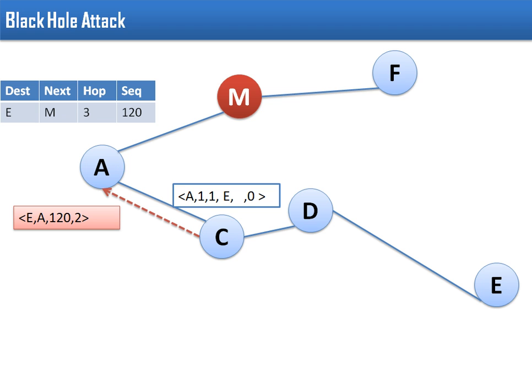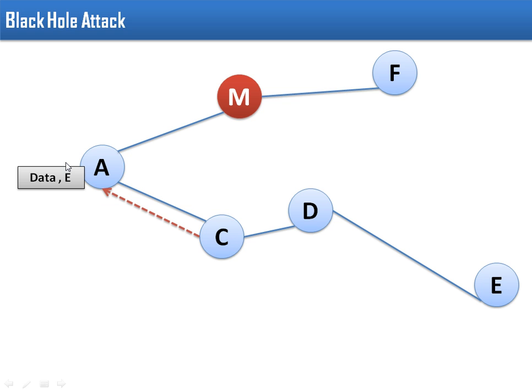So A will create an entry in the routing table that if the destination is E, forward those packets to M with hop count 3 and sequence number 120. So in future, when A wants to send some data to node E, A will check its routing table and find out that in order to send data to E, the next hop is M.